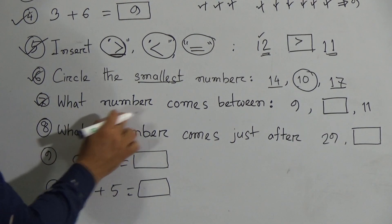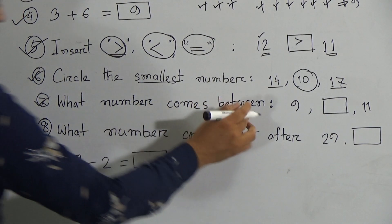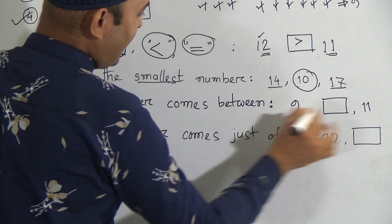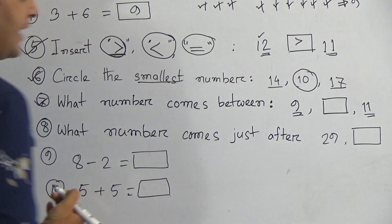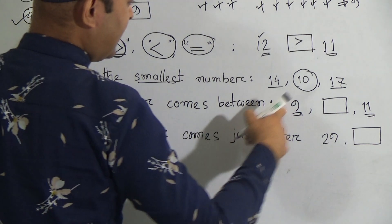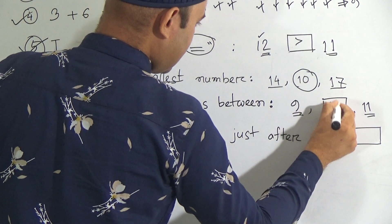Then go to next one. What number comes between, what number comes between 9 and 11? 9 and 11. You have to count: 9, 10, then 11. So it will be 10.